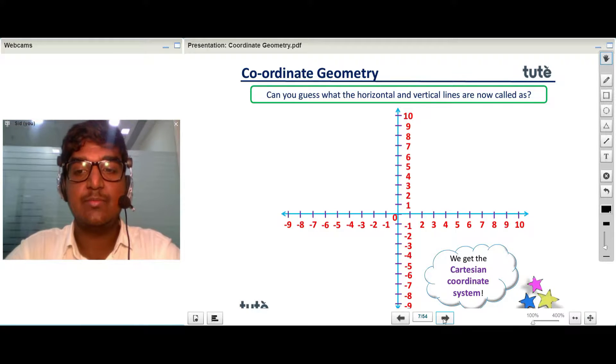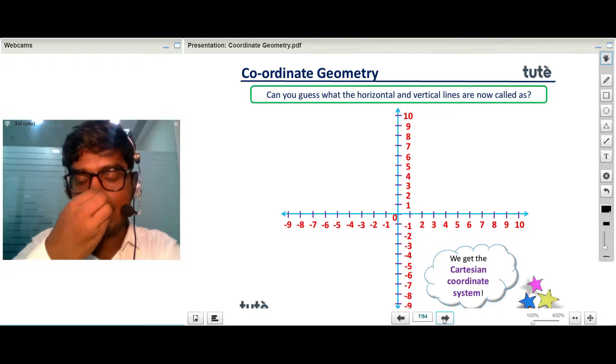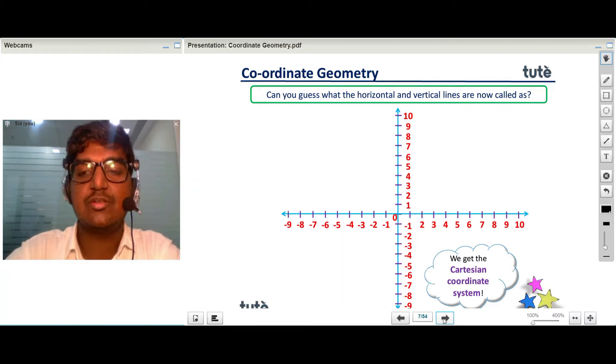As you can see, the vertical number line and the horizontal number line together give us the Cartesian coordinate system. But, can you guess what the horizontal and vertical lines are now called?